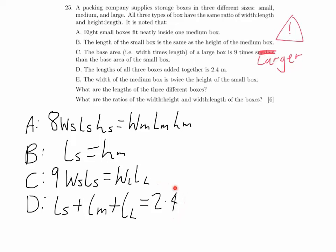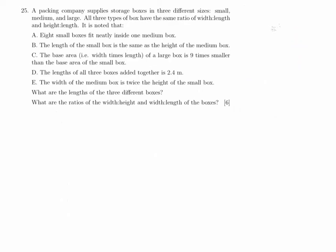The final thing we're told is that the width of the medium box is twice the height of the small box, so twice the height of the small box equals the width of the medium box. What we're looking for is the lengths of the three boxes, the width-to-height ratio, and the width-to-length ratio.